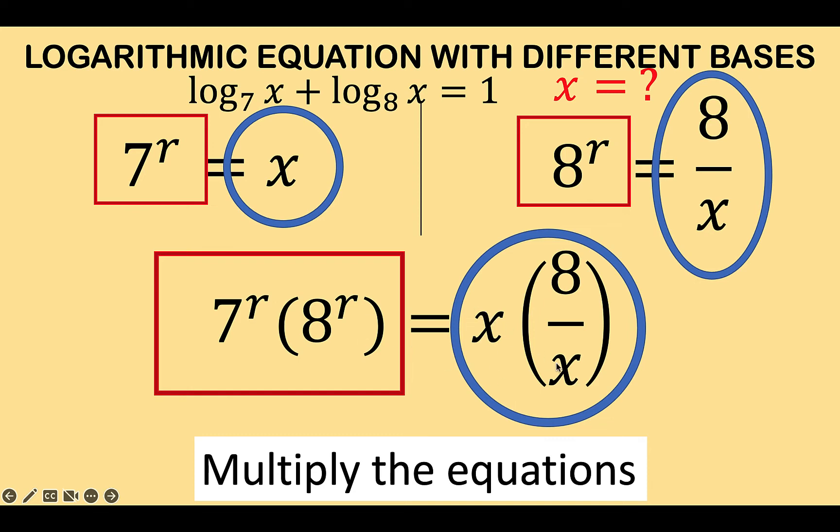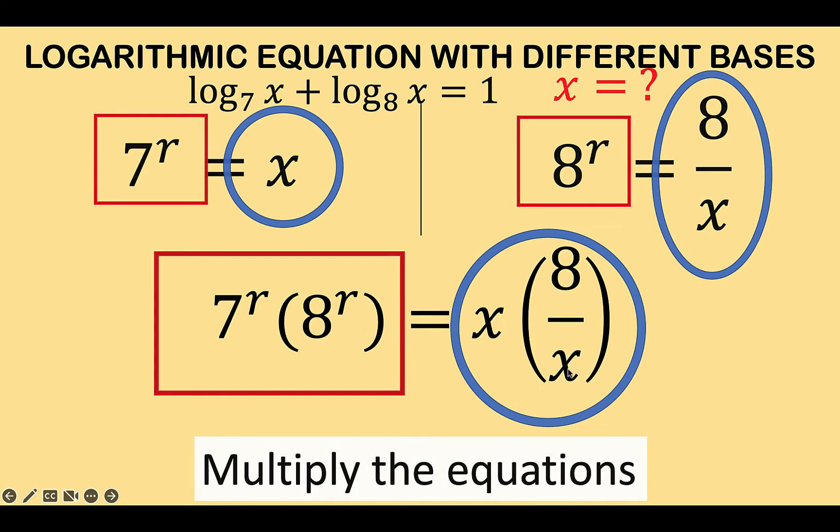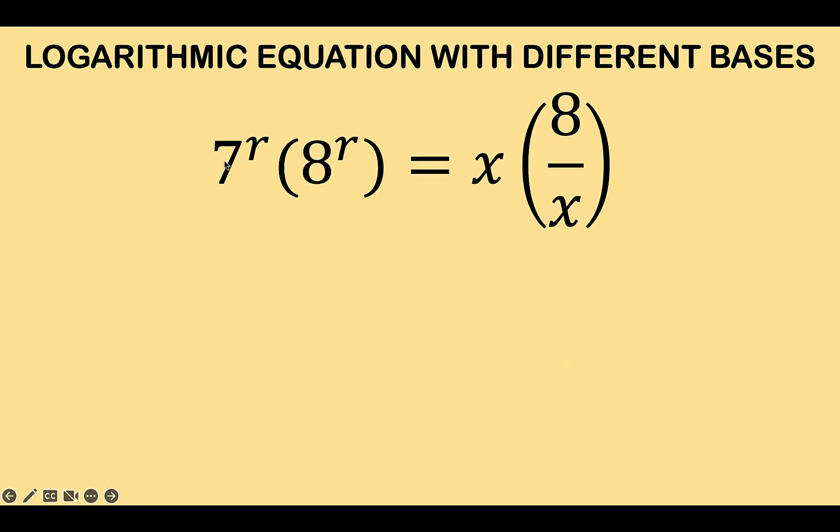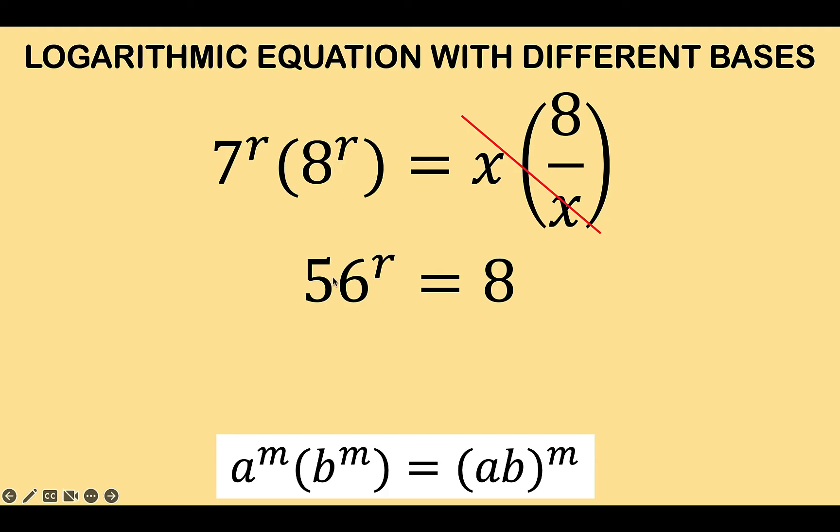This is now easier to manipulate because notice that x and x are the same. This can be cancelled out. So let's do that. Using property of exponent when you have the same exponent and you multiply exponential numbers then you can just multiply the base and copy the common exponent.